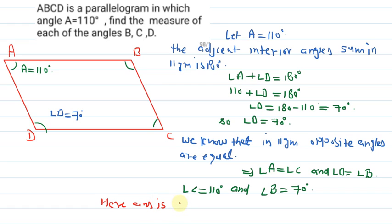So here, answer is angle A is equal to 110 degree, angle B is equal to 70 degree, angle C is equal to 110 degree and angle D is equal to 70 degree. I hope you understood the explanation. Thank you.